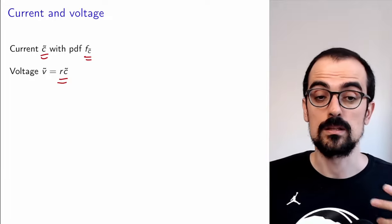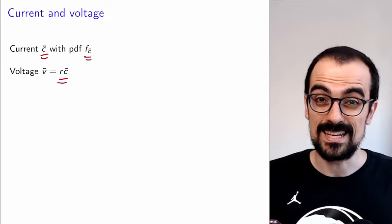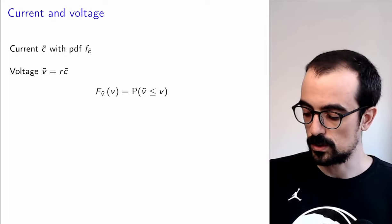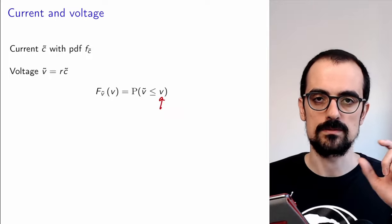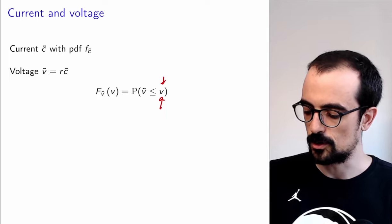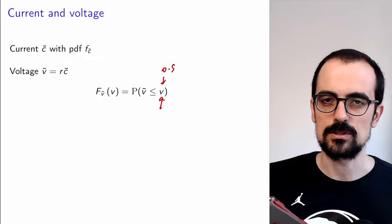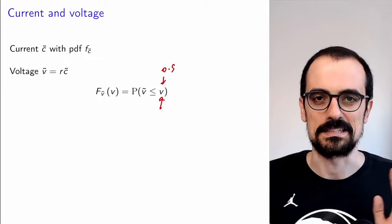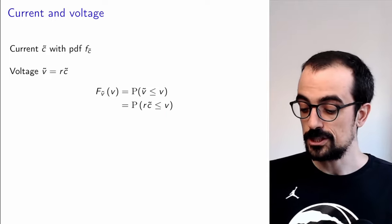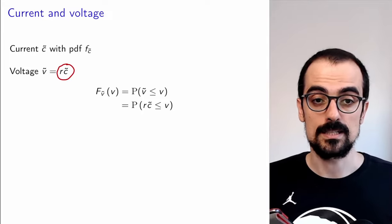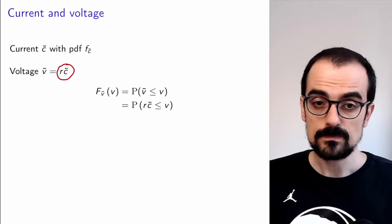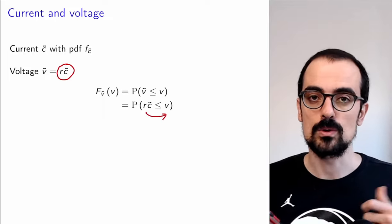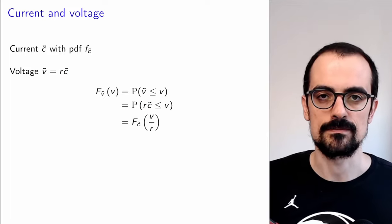We want the PDF of V, but we always start with the CDF because that has an interpretation in terms of probabilities. The CDF of V is just the probability that V is smaller or equal to any value on the real line. By definition, we can plug in the expression of V in terms of C, since V = R·C. R is a non-negative constant, so we can pass it to the other side and get the probability that C is smaller or equal to V/R, which by definition is just the CDF of C.